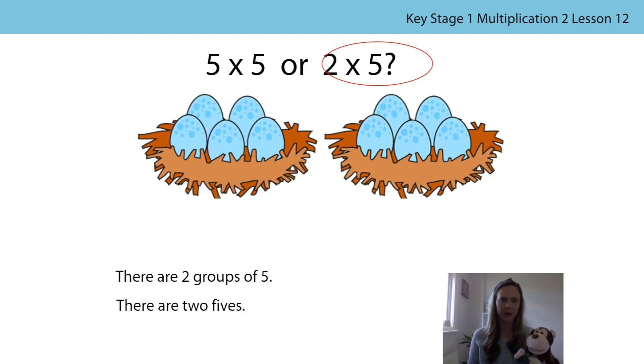Can you think about what a picture would look like to represent five times five? That's right — we'd have to have five nests.